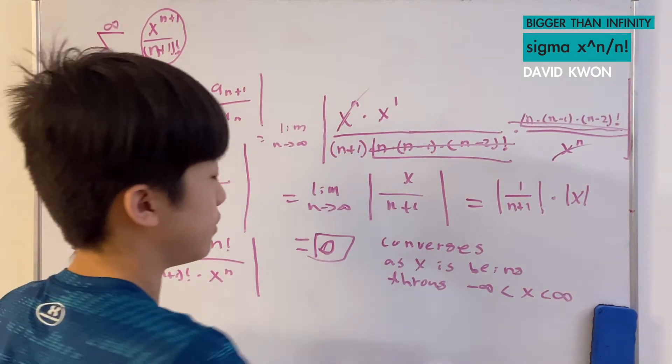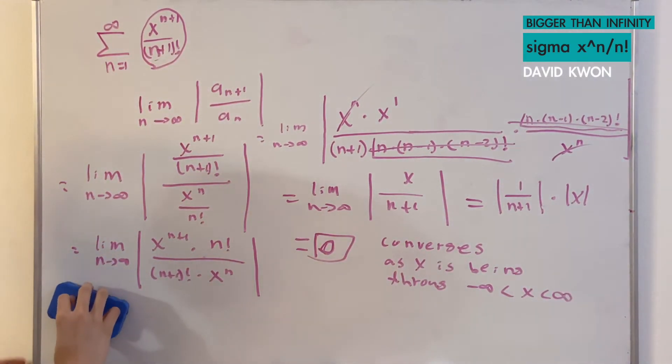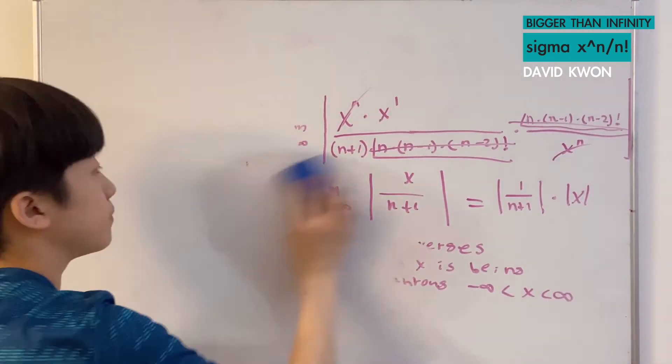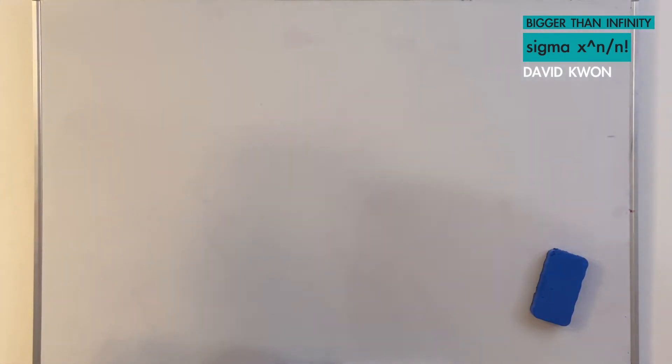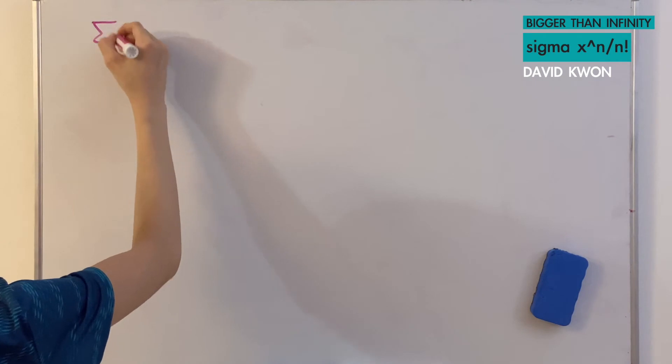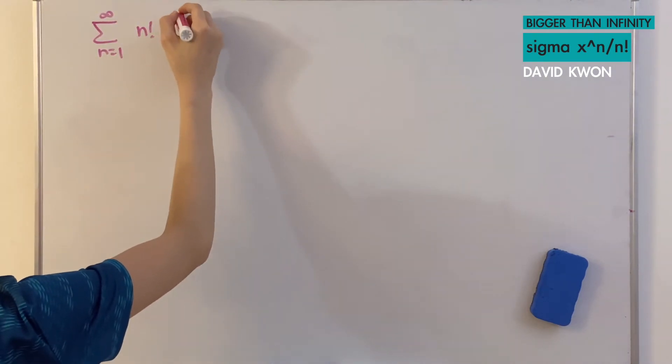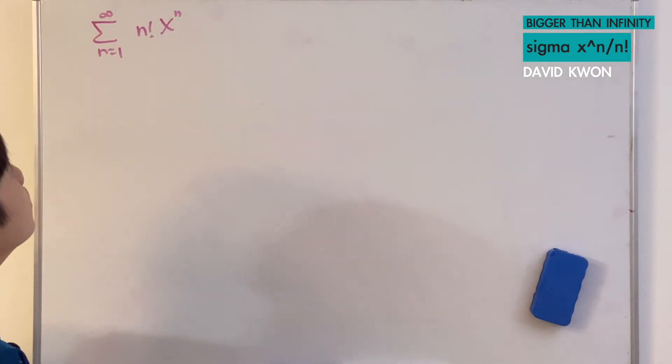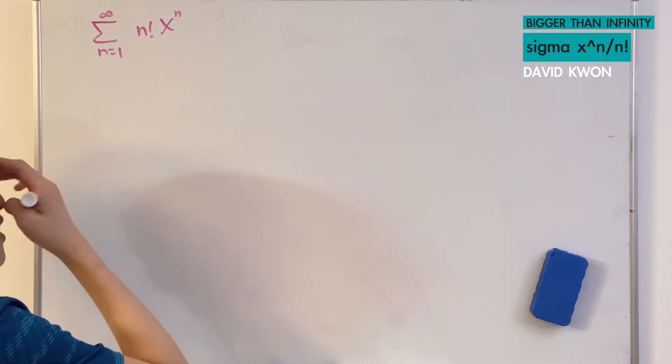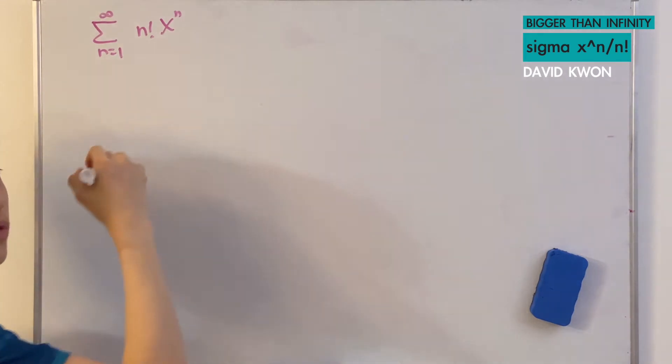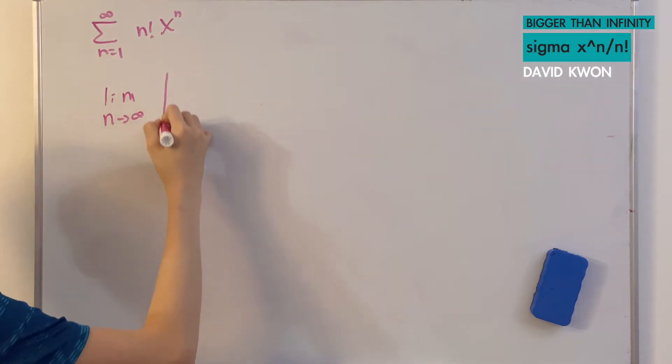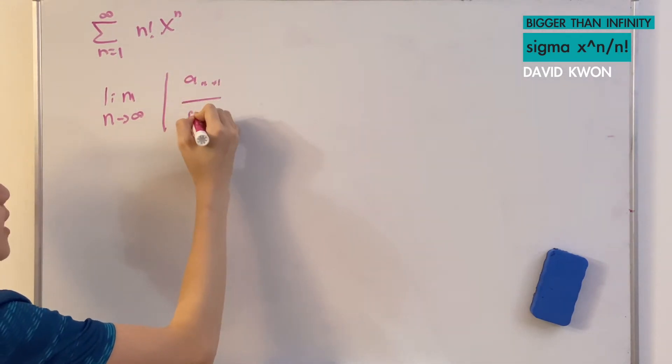We are done. But there's one more thing we have to do. One more ratio test from an equation that we will try to solve. Which that equation is n factorial times x to the power of n. We use the ratio test again.